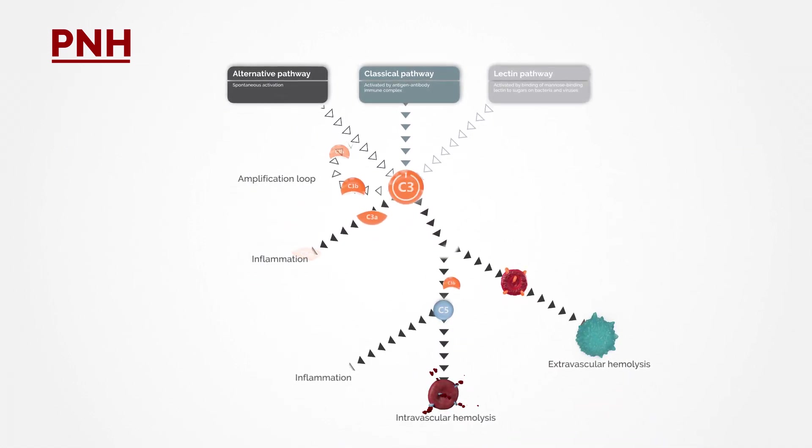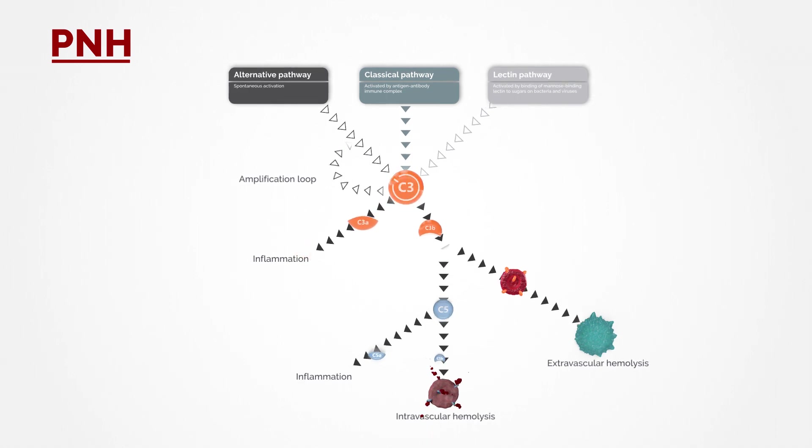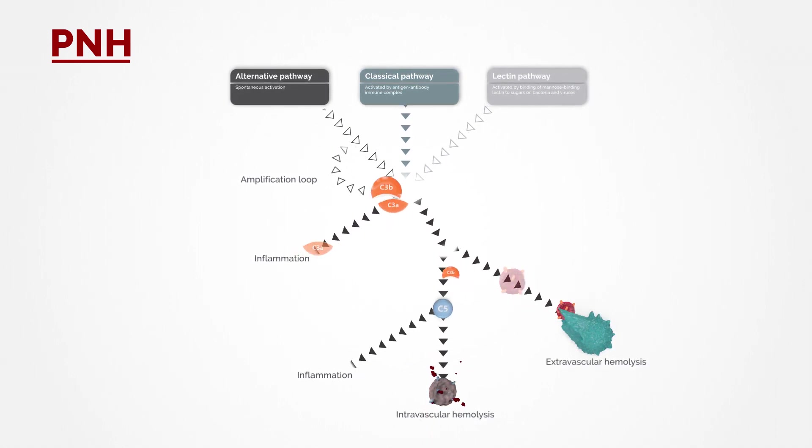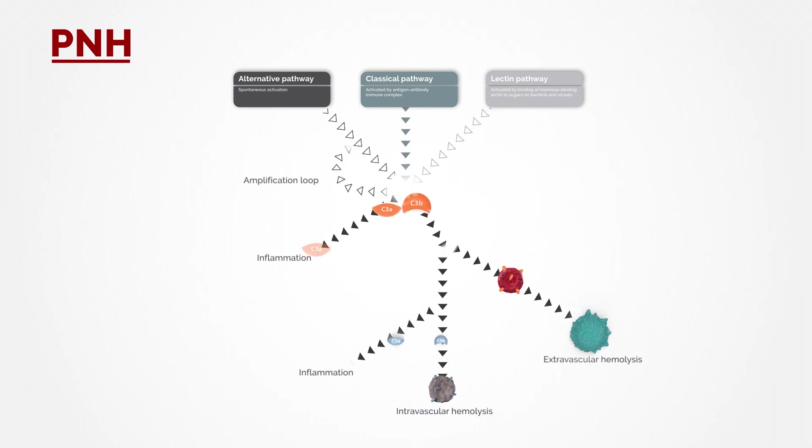As a result, the complement protein C3 becomes unregulated, triggering all downstream effectors that ultimately cause destruction of blood cells.